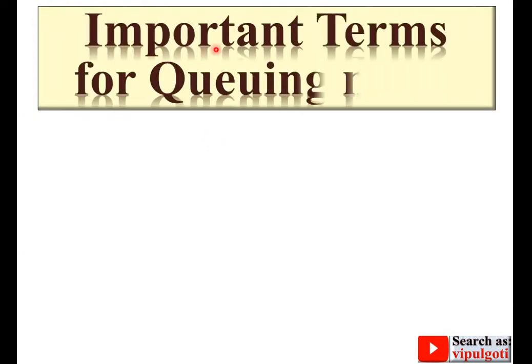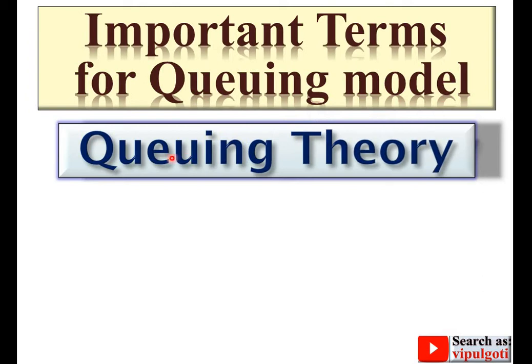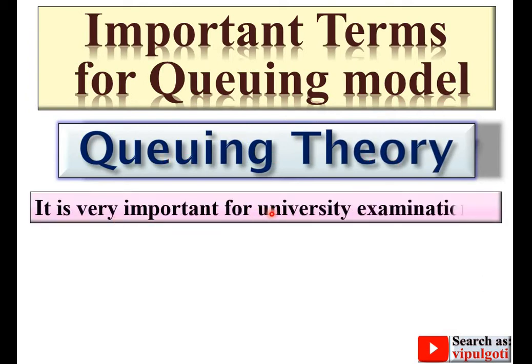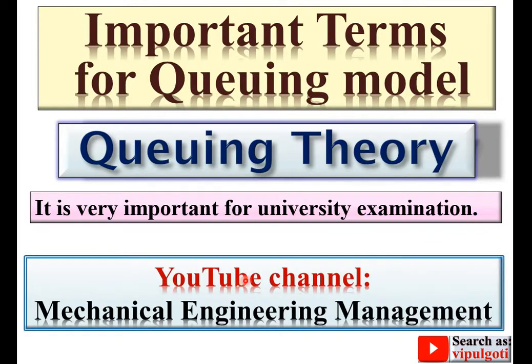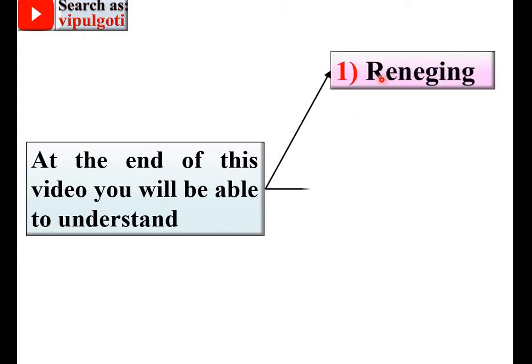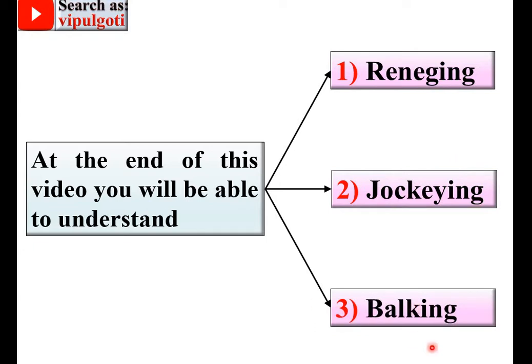Today I am going to teach you important terms for queuing models from the queuing theory chapter. It is very important for university examination. Welcome to my YouTube channel, mechanical engineering management — like, share and subscribe. At the end of this video you will be able to understand: first, reneging; second, jockeying; and third, balking. So let's see one by one.